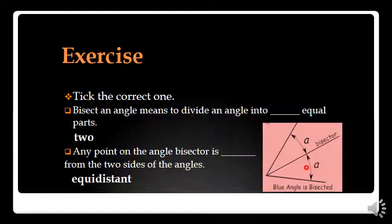And this angle bisector divides this angle into two equal parts. The part one is a, both of these parts are represented by a. So an angle bisector divides an angle into how many parts? Two equal parts.